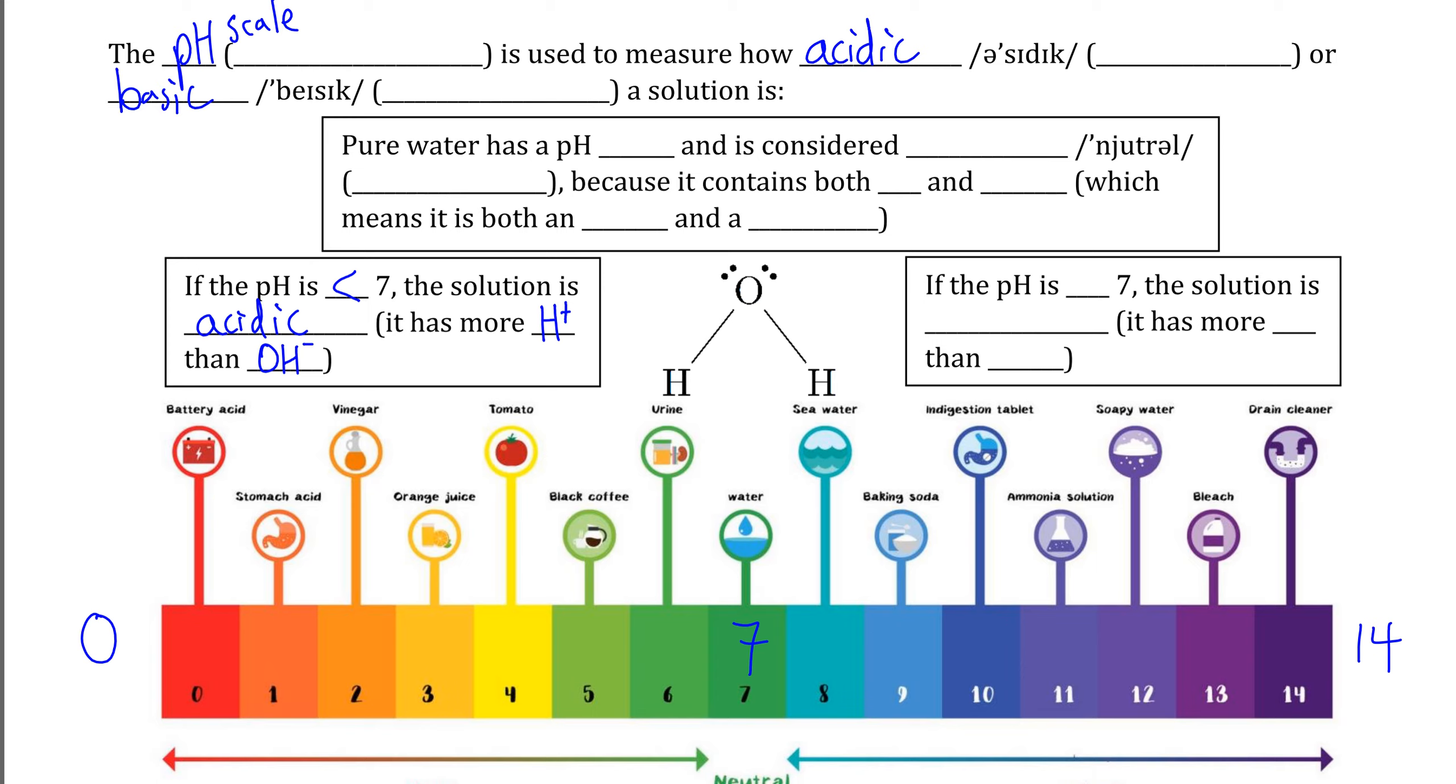However, if the pH is greater than 7, meaning if we have a pH between 7 and 14, the solution is defined as basic because the solution has more OH- from base than it has H+ from acid.